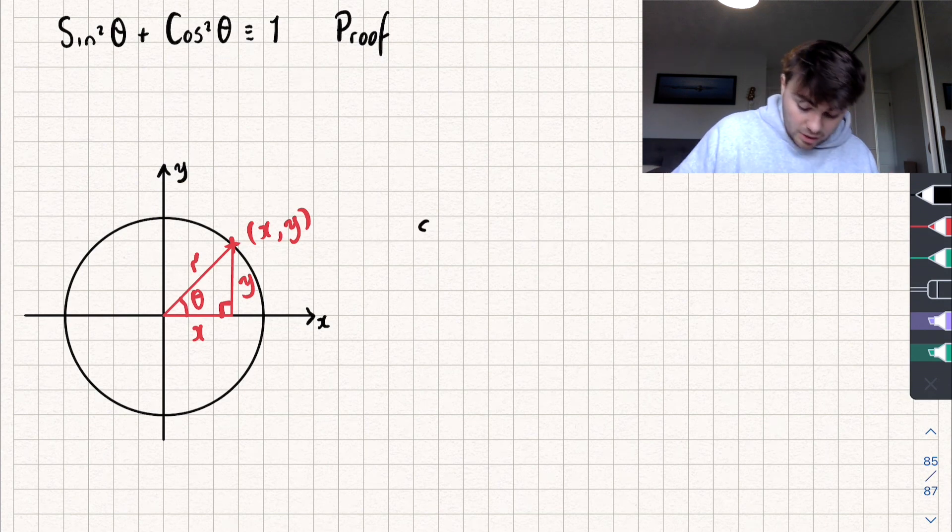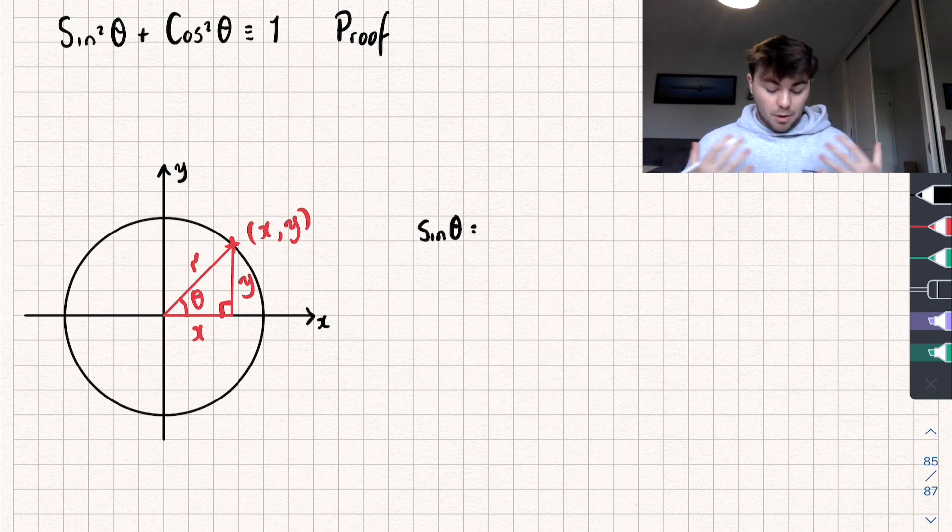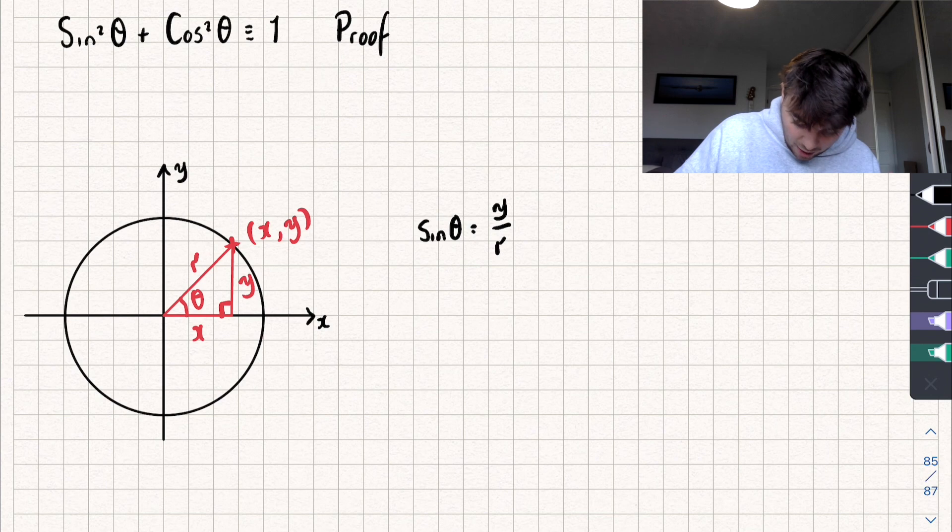Well, I could say that sine of the angle, so sine of theta, that's equal to my opposite divided by my hypotenuse. Well, the opposite is y and the hypotenuse is r. So sine of our angle theta is equal to y divided by r.